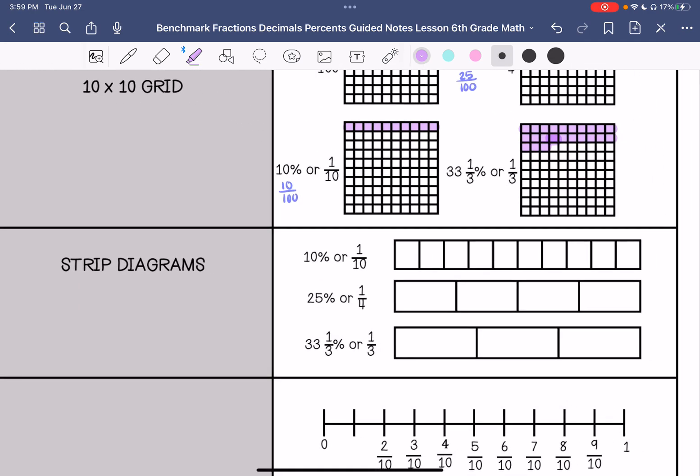All right, then I'm going to represent these each in a strip diagram. So one-tenth percent or one-tenth is one out of 10. So just be shading one of these out of 10.